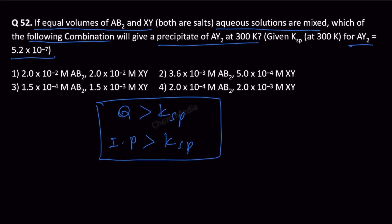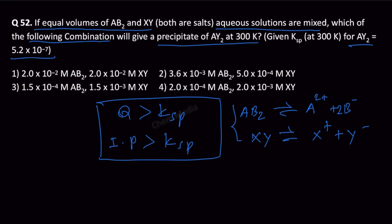AB₂ dissociates as A²⁺ + 2B⁻, with stoichiometric coefficient 2 to balance the equation. XY dissociates as X⁺ + Y⁻. By mixing these two solutions we are getting AY₂. Therefore AY₂ at equilibrium would dissociate as A²⁺ + 2Y⁻ in aqueous medium.